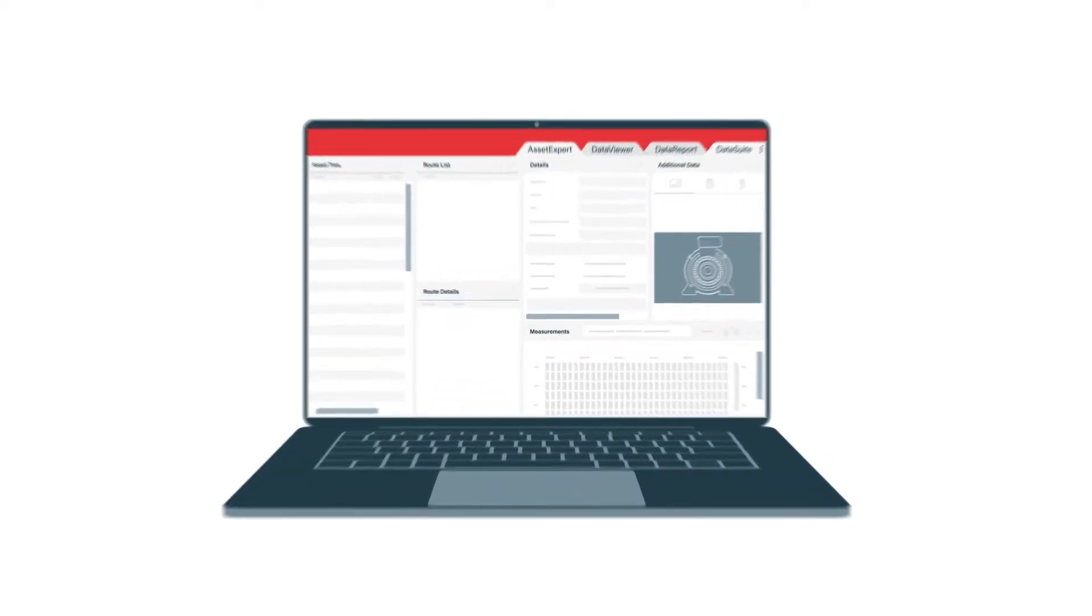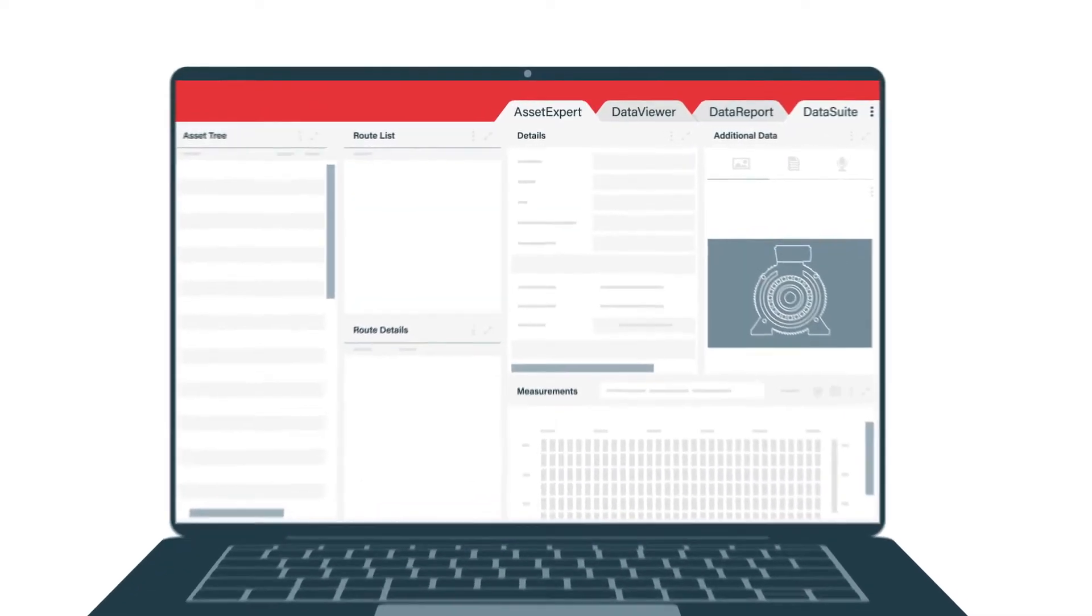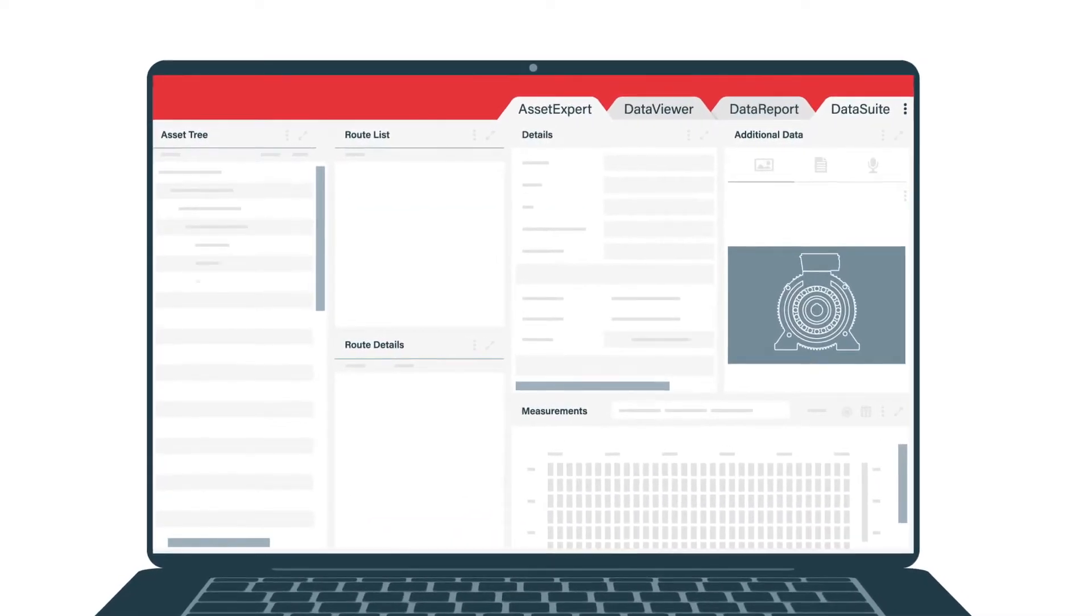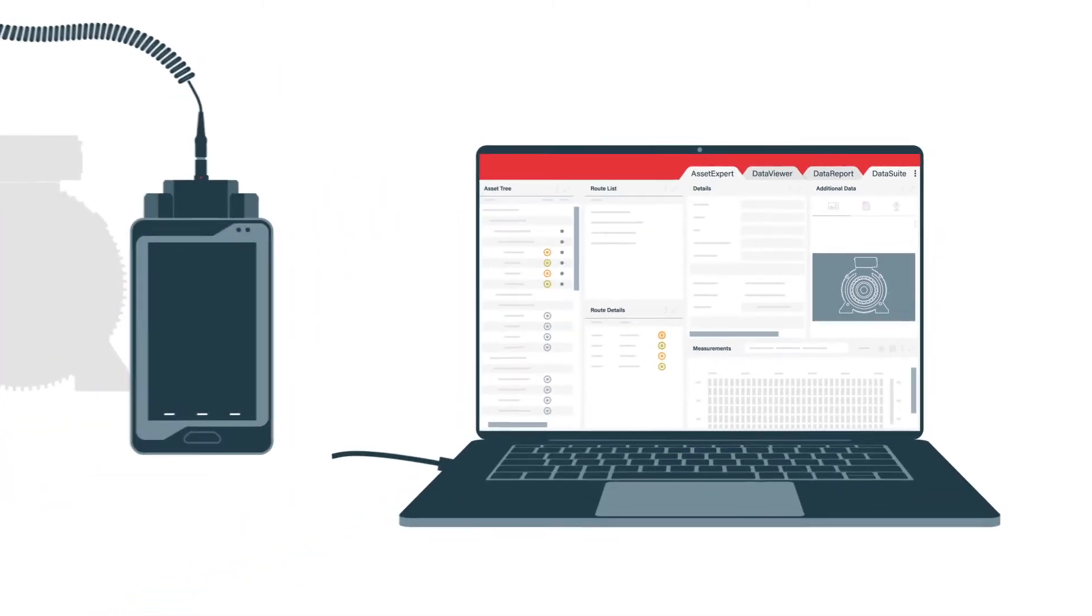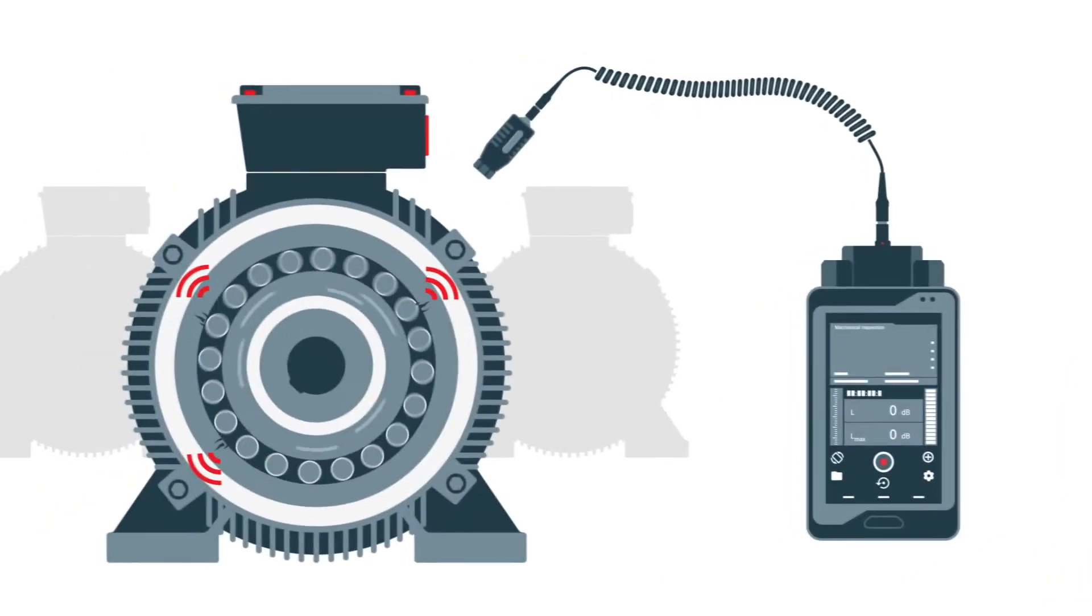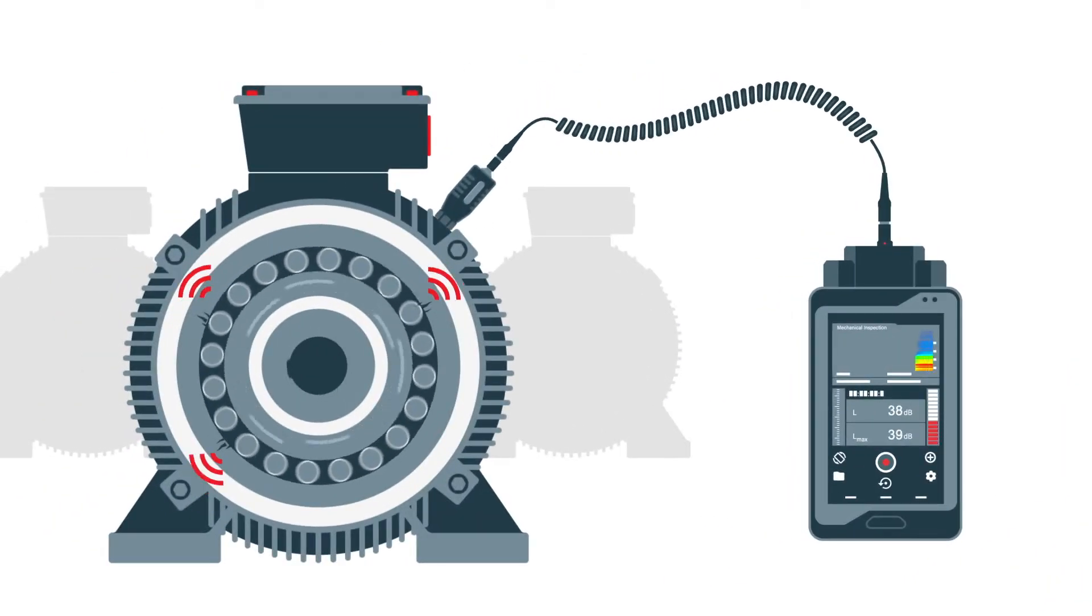This is how it works: First, all measurement points are created in the Sonophone Data Suite. Then a route is created, transferred to the Sonophone, and off we go to the on-site test. Start the test process and add additional information.